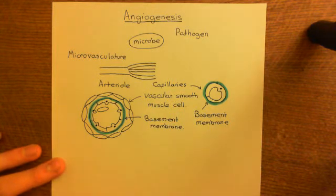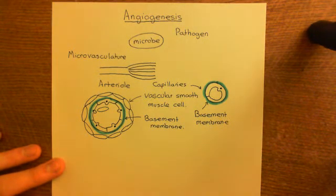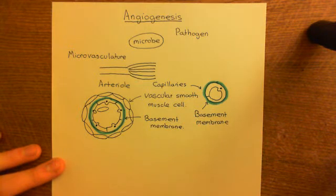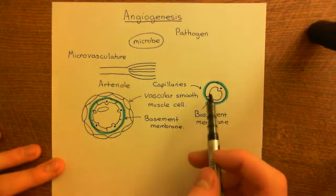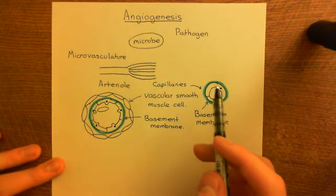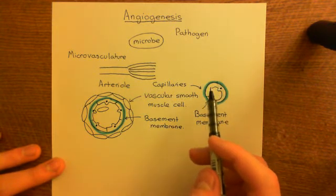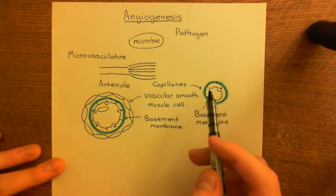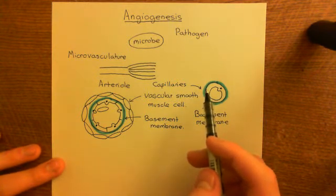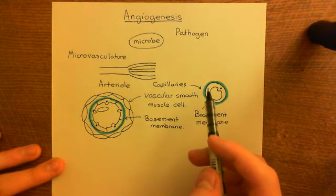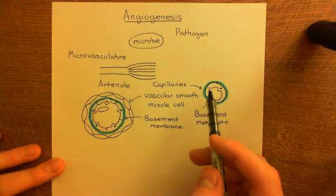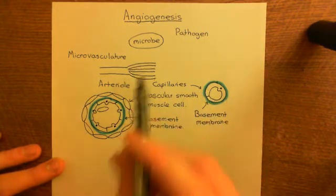The capillaries are called the business end of the microvasculature because they are where exchange of gases, nutrients, and waste products occurs. One of the major points of the vascular system is to supply nutrients to tissues — the archetypal examples being oxygen and glucose — and to remove waste products, the archetypal example being carbon dioxide. That exchange occurs at the capillaries.